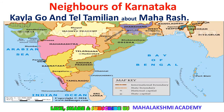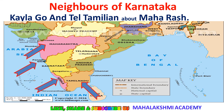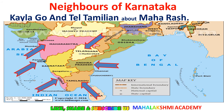Now let's move to the map. Here we can see the Karnataka region and check out its neighbors: Maharashtra, Goa, Kerala, Tamil Nadu, Andhra Pradesh, and Telangana. These are the regions touching or sharing boundaries with Karnataka.